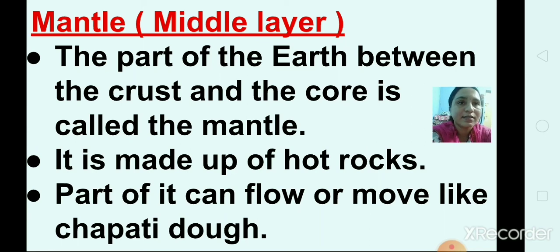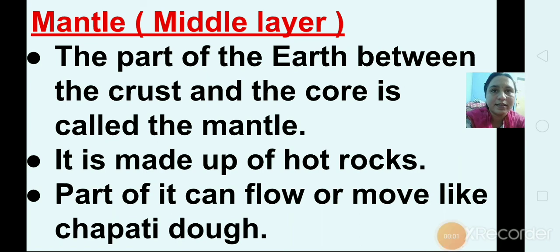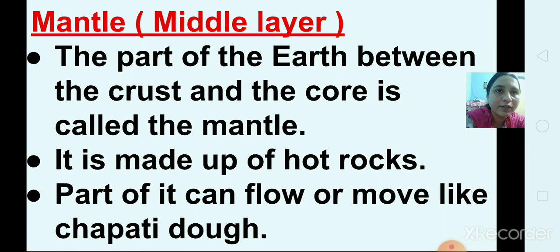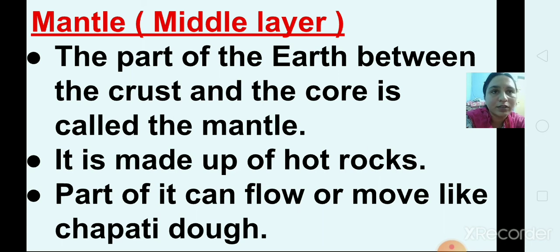The mantle lies just below the crust. It is made up of melted rocks — that is, rocks in a liquid state. Cool rocks are present on the crust, but melted rocks are present on the mantle. The mantle is the part of the earth between the crust and the core. It is made up of hot rocks, and part of it can flow or move like chapati dough.